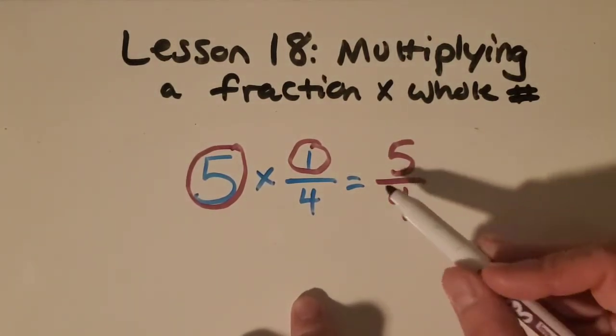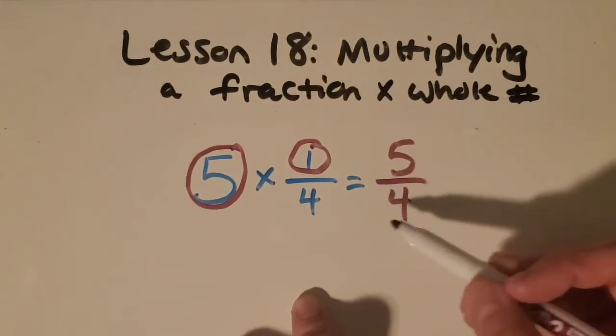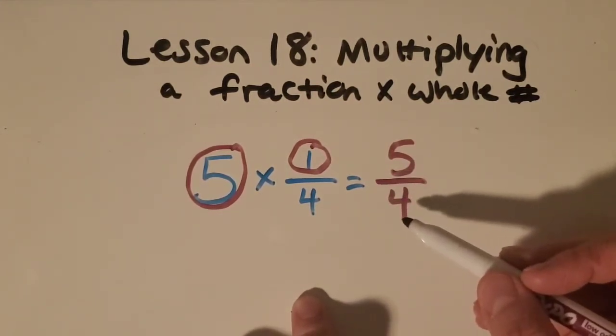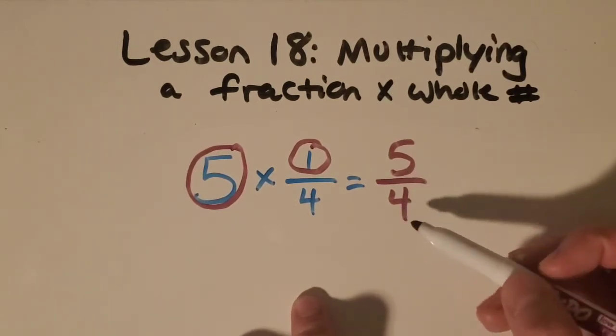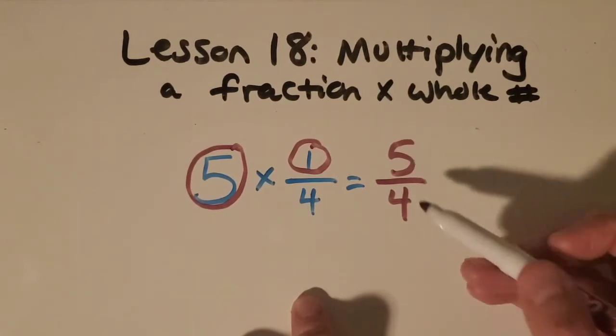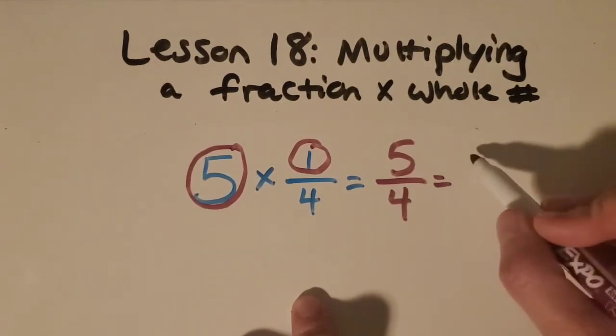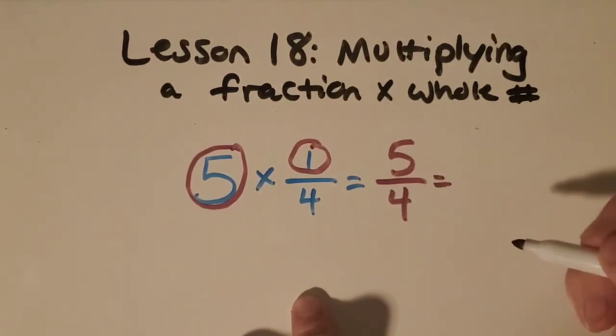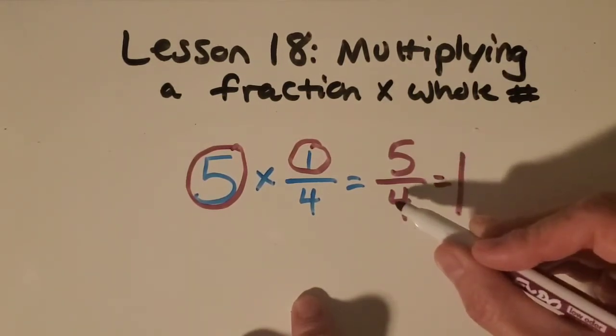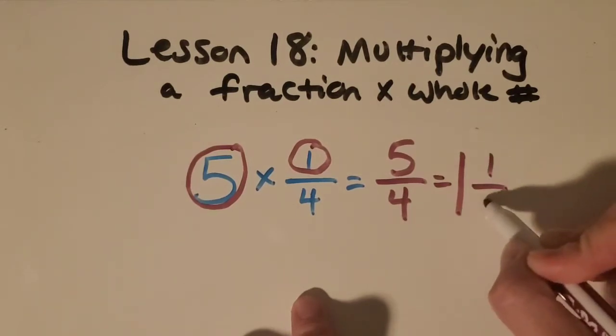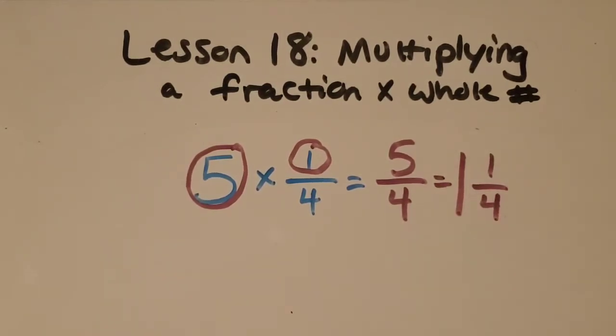So I need to think about fourths and how many of them equal one whole. Okay, great. Four of them equal one whole. So if I have five, I just have one more. So I could say I have one whole with those four-fourths and then one-fourth left over.